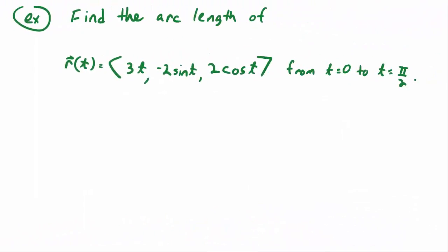Let's find the arc length of R of T from T equals zero to T equals pi halves. First, write down the formula every time you use it: S equals the integral from A to B of the magnitude of R prime of T, DT. Looking at the formula from the inside out, you need to find R prime of T first, then its magnitude.